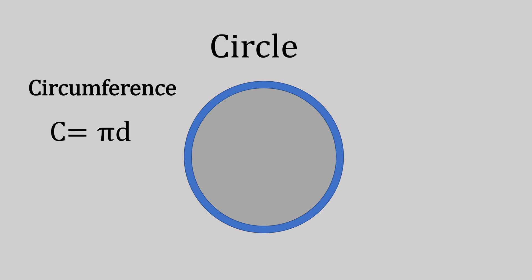A circle. We're going to look at the circumference, which is the line around the outside of the circle, like a fence. Our formula is C equals πd, which is pi times diameter. We can remember this with cherry pies delicious.